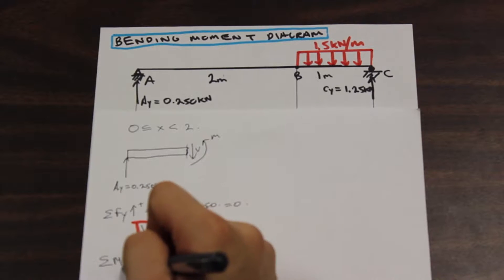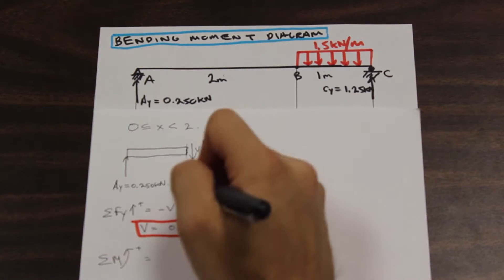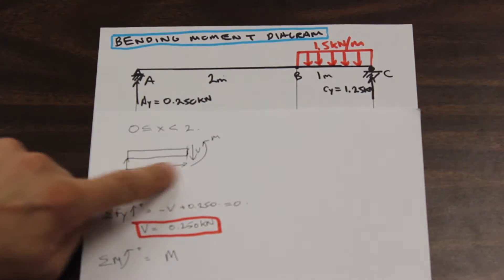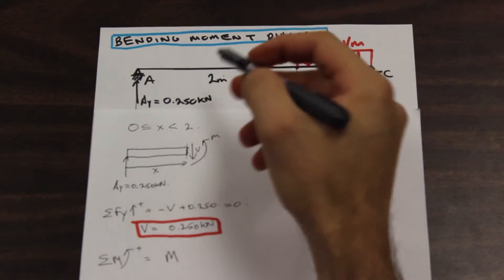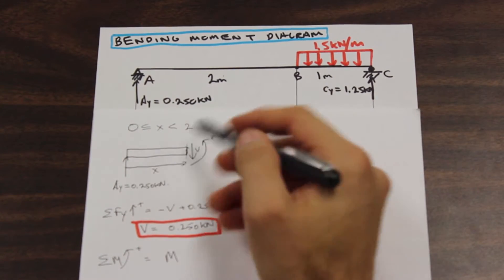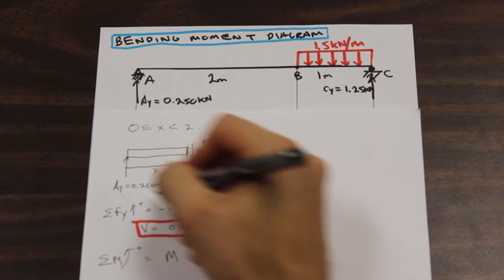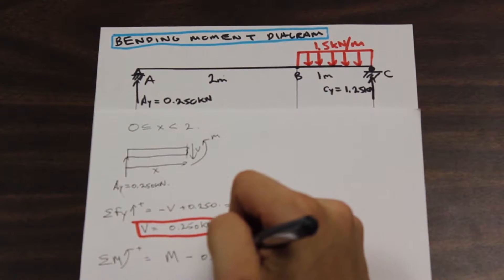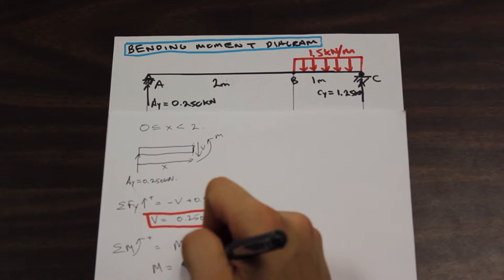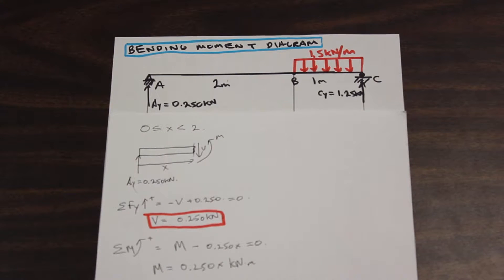Let's take the moment now. We're going to say that counterclockwise is positive. We have a counterclockwise moment M, and we have Ay acting at distance X — from where we started to where we cut, we call that X, a variable distance. The force of 0.250 is multiplied by distance X to get the moment. That acts in the clockwise direction, so it's negative. So we have M plus 0.250X equals zero, giving us M equal to 0.250X kilonewton meters. So that is our first section of the beam done.